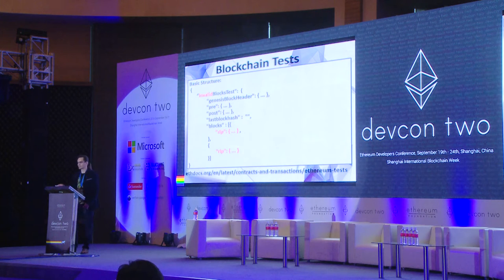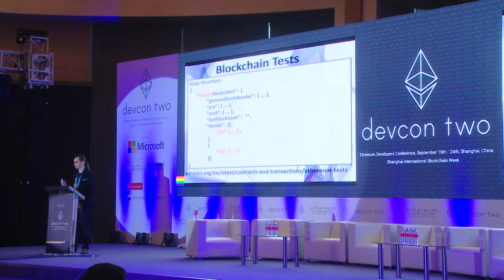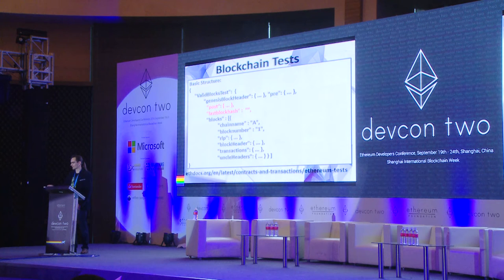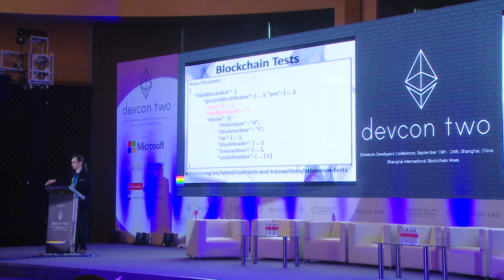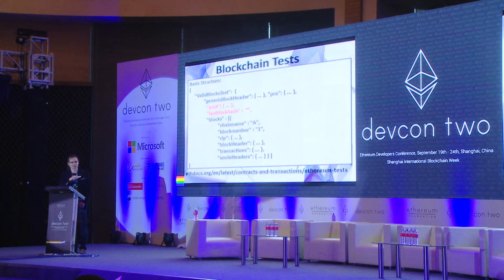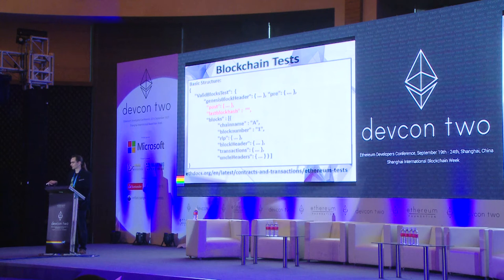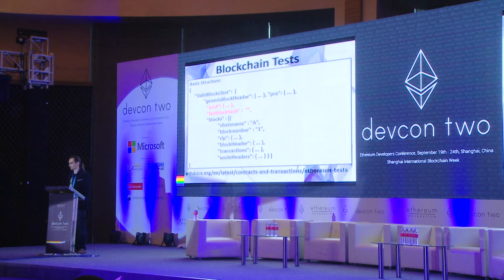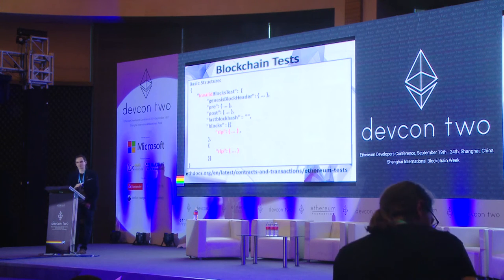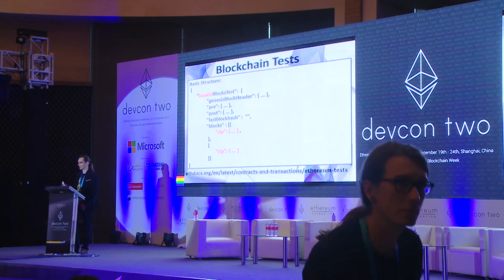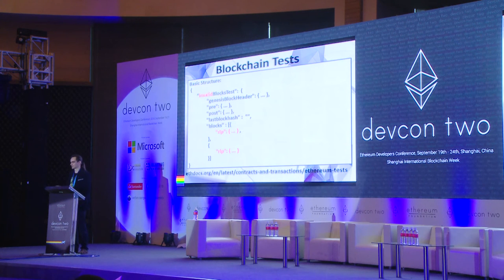Invalid blocks are represented by empty RLP bytecode, while a valid block has different parameters that are also encoded into RLP. What clients should do is read such blocks from a test file, decode the RLP, and compare parameters of a block to the ones described in the test file. For invalid blocks, there is just RLP, meaning such blocks should be considered invalid. If a client considers such a block valid, then something is wrong.